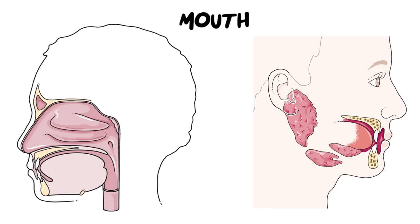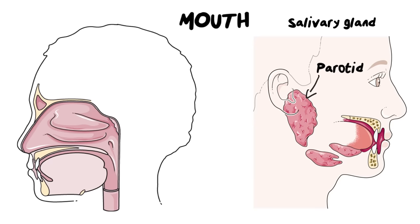Now we're going to move into the mouth, past the teeth, and look at all the accessory structures assisting us with chewing and swallowing — starting off with the salivary glands. You have three pairs of salivary glands. The biggest one is located at the back of your mouth underneath your ear and is called the parotid gland. You have one on the other side of your mouth too, but we can only see one here.